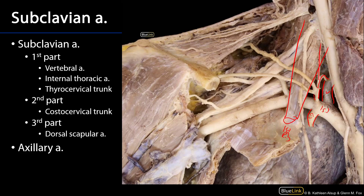The ascending cervical artery supplies deep neck muscles such as the anterior scalene muscle with blood. The transverse cervical artery supplies trapezius with blood. And the suprascapular artery supplies some of the rotator cuff muscles — namely supraspinatus and infraspinatus — with blood.